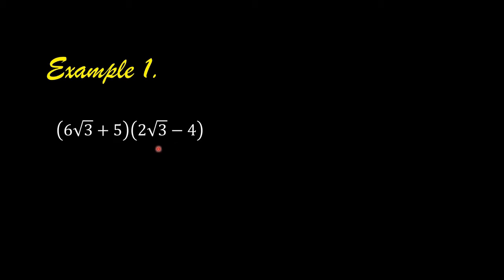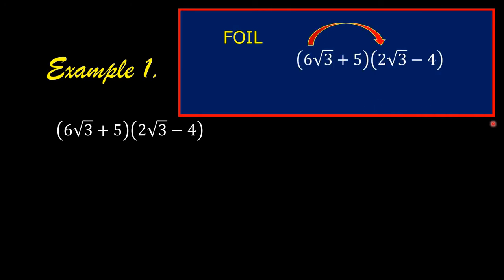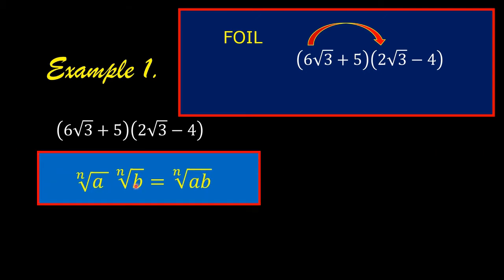To multiply these two binomial radical expressions, we can use the FOIL method. First term times first term: 6 times 2 is 12. We can multiply the square root of 3 by the square root of 3, according to the law of radicals: the nth root of a times the nth root of b is equal to the nth root of a times b.